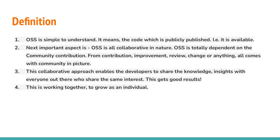Let's first define what open source software is. OSS is very simple to understand — it literally means that the code is publicly published and available open. The next important aspect is that OSS is all about collaboration. It is collaborative in nature; it invites people to come and contribute. It is totally dependent on community contribution — from improvement to review to change. The collaborative approach enables developers to share knowledge and insights, so that everyone benefits. That's what OSS is all about.